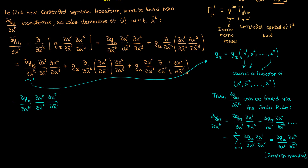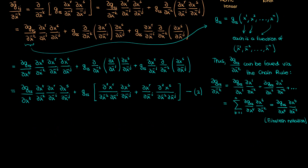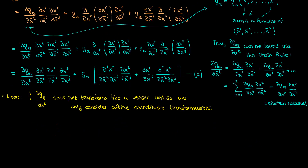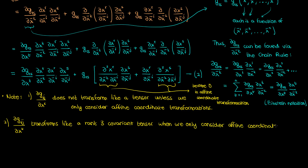If I now plug this into the expression for the partial of the barred metric tensor component with respect to x super k bar, and combine the partial derivative terms taking g sub rs common, I get a slightly less cumbersome expression — I'm going to call this equation 2. This equation tells you that the partial of the metric tensor with respect to a coordinate does not transform like a tensor unless we only look at affine coordinate transformations, where the x super i bar coordinates are linear combinations of the x super i coordinates. Under an affine transformation the second-order mixed partial derivatives become 0, and you end up with a transformation law corresponding to a covariant tensor of rank 3.